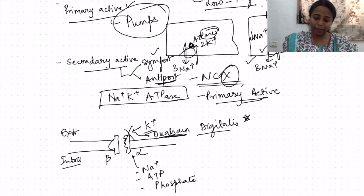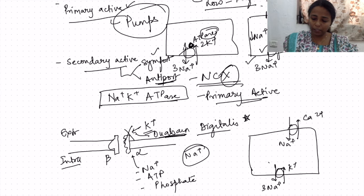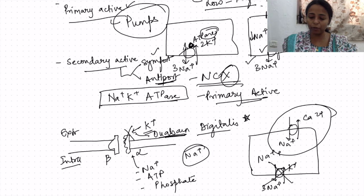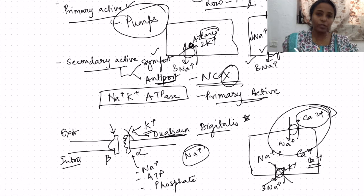Extracellularly, there is also a binding site for ouabain and similar chemicals like digitalis, which is used as a drug. Digitalis blocks the activity of sodium-potassium ATPase, causing sodium to accumulate inside the cell. This prevents the sodium-calcium exchanger from working — because the sodium gradient is lost — so calcium is not thrown out of the cell. The beta subunit also has three glycosylation sites.